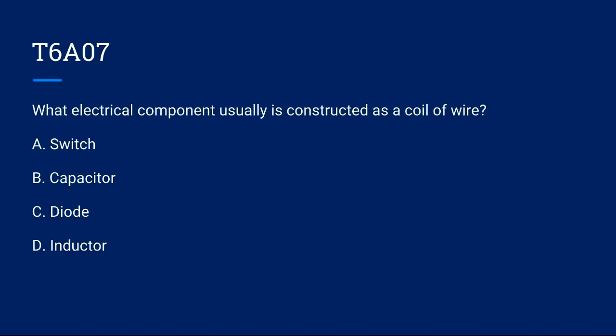T6A07: What electrical component is usually constructed as a coil of wire? A, switch. B, capacitor. C, diode. Or D, inductor? The correct answer is D, inductor.